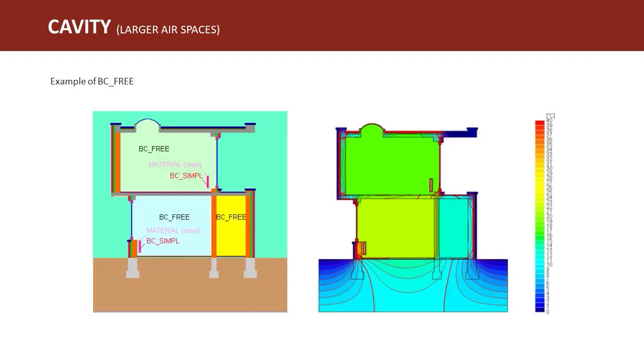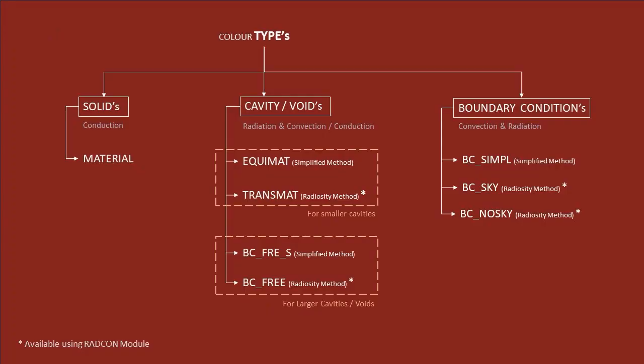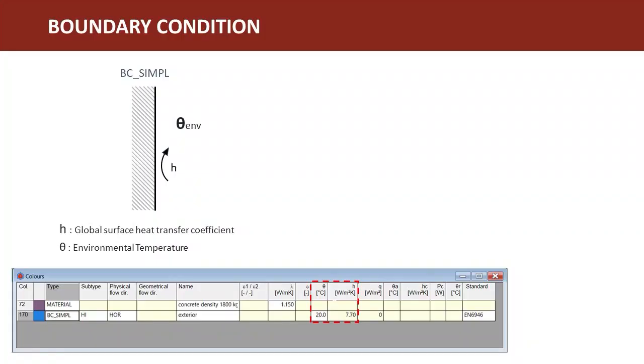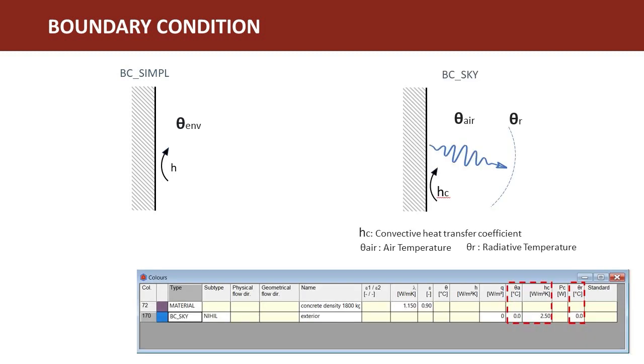Here we see an example of BC_FREE, where rooms are modeled as BC_FREE. Similarly, for boundary conditions, for a simplified approach we choose BC_SIMPL. Here we combine the effect of radiation and convection between the environment and surface as one global surface heat transfer coefficient h. This defines the heat transfer from the surface to environment temperature theta.